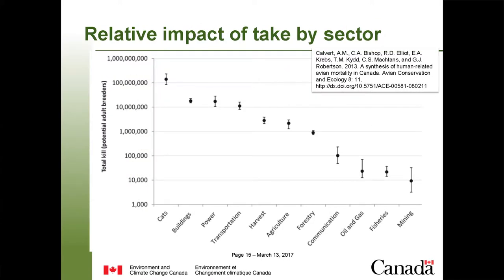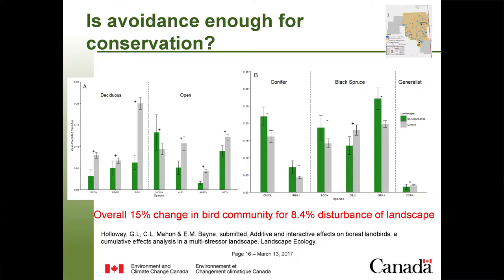For forestry, the estimate of the tally for take is about a million birds. But if we did total avoidance of that and managed it, would we have conservation of birds? We know the boreal produces billions and billions of birds. I don't believe total avoidance alone would be sufficient — I think we have to go further if we're talking about conservation of birds in forests. We all know that habitat alteration and habitat change is the big story here.